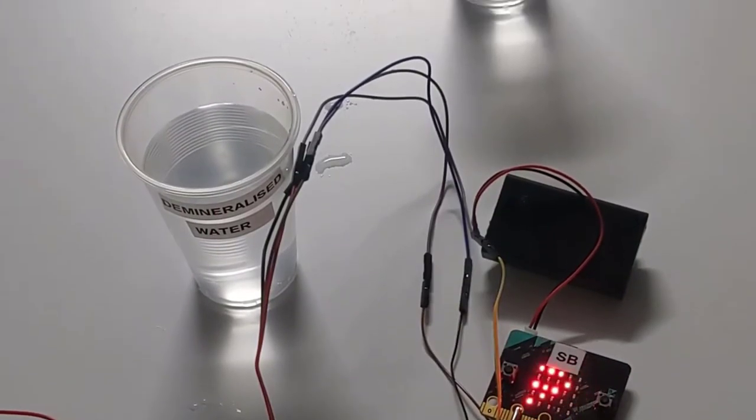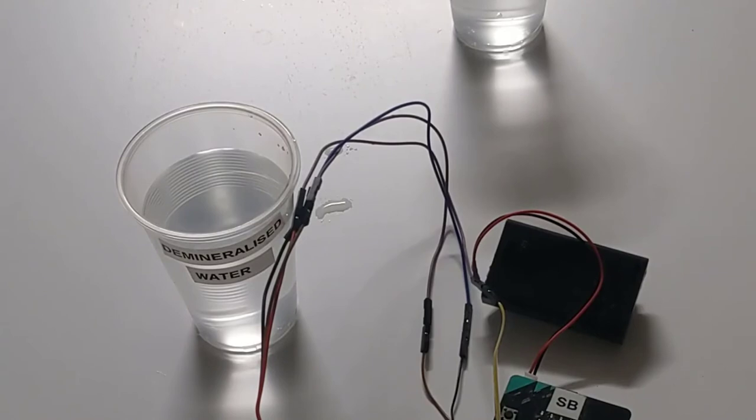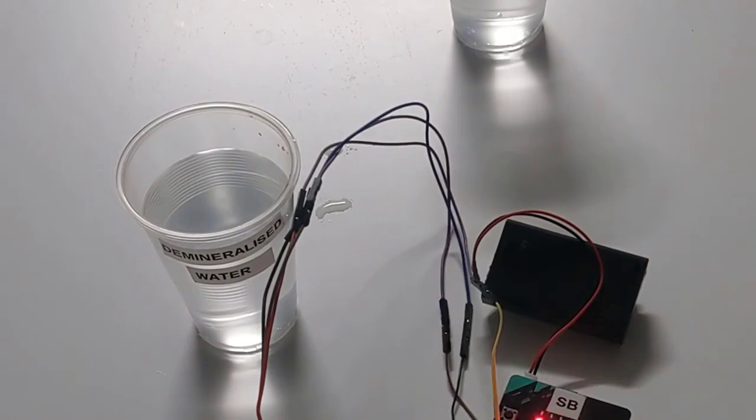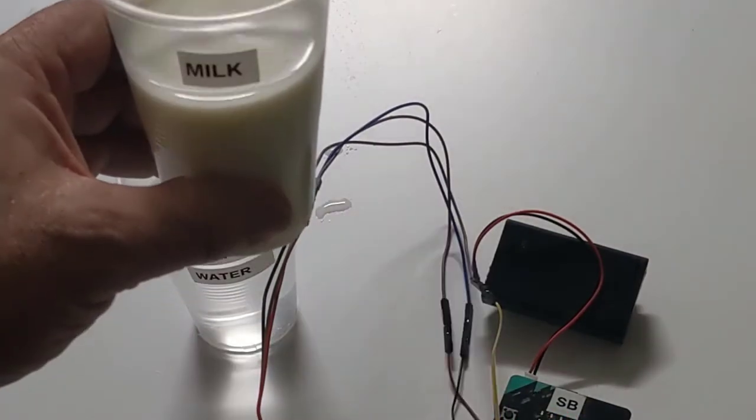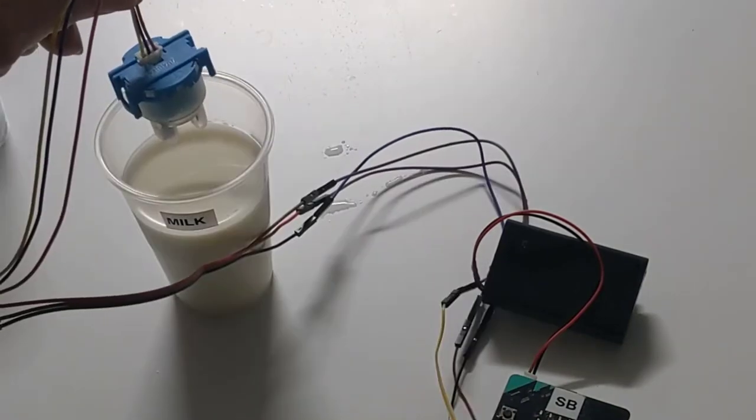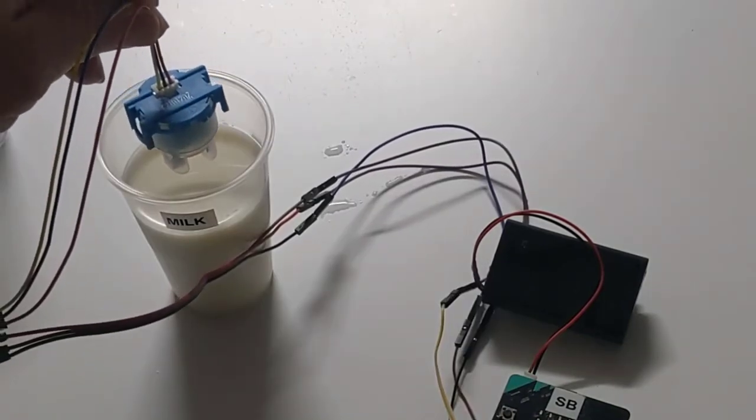And now I'm going to find the turbidity of something that I know has a much lower reading and that is milk. So here I have a cup of milk. And when I place the turbidity meter into the milk,